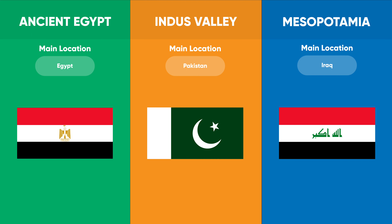Indus Valley civilization was located in modern-day India and Pakistan and covered an area as large as Western Europe. Harappa and Mohenjo-Daro were the two great cities of the Indus Valley civilization, emerging around 2600 BC along the Indus River Valley in the Sindh and Punjab provinces of Pakistan. Mesopotamia is situated in the fertile valleys between the Tigris and Euphrates rivers.